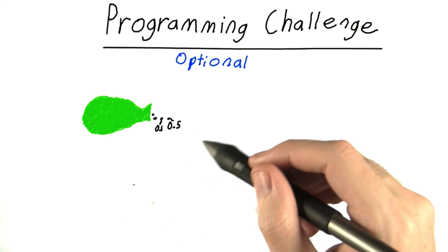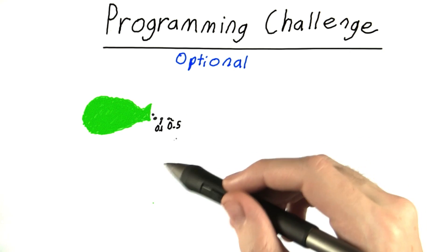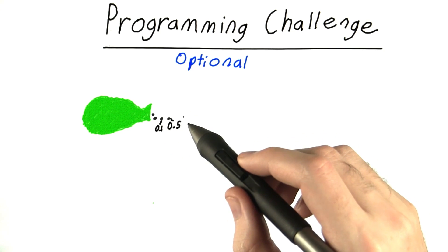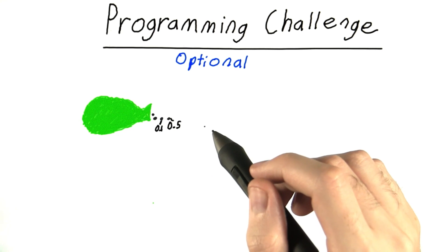And each time I flip it, I'd like you to tell me what your best guess is for the probability of it being heads on the next flip. To do this, we're going to write a program in Python.